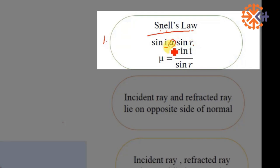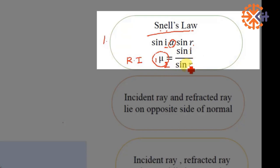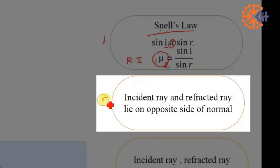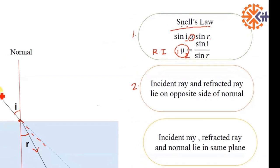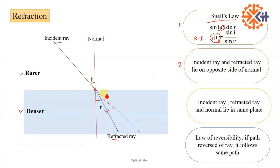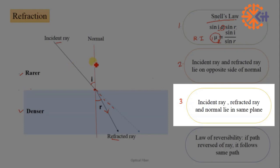A second important observation is that the incident ray and refracted ray lie on opposite sides of the normal. Third, the incident ray, normal, and refracted ray must lie in the same plane. The law of reversibility states that if we reverse the path of a light ray — light travelling from rarer to denser — and instead let it travel from denser to rarer, it follows the same path, with the angle of refraction becoming the angle of incidence and vice versa.